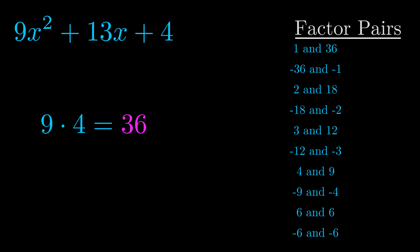The b value is the coefficient on the x term. That's the middle term, the one that we haven't done anything with yet. And really this is the only factor pair that we need.